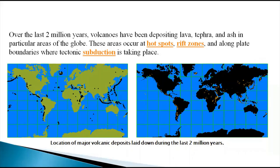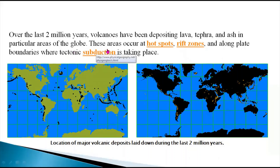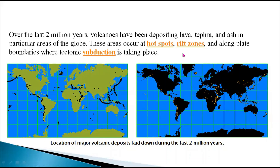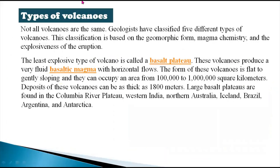Over the last two million years, volcanoes have been depositing lava, tephra, and ash in particular areas of the globe. These areas occur at hot spots, rift zones, and along plate boundaries where tectonic subduction is taking place. When volcanoes erupt, they leave substances like lava, tephra, and ash.